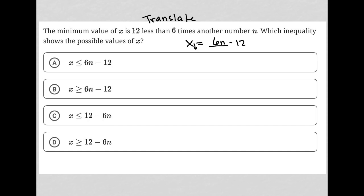Which inequality shows the possible values of X? Oh, I see. Okay, so the minimum value just means that X has to be greater than or equal to that.